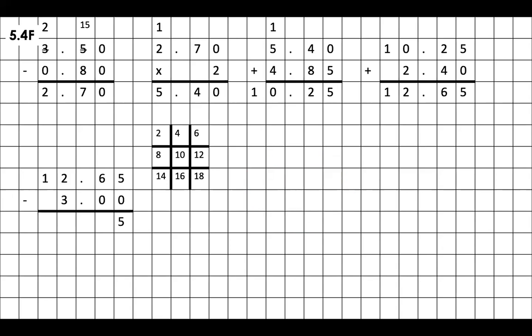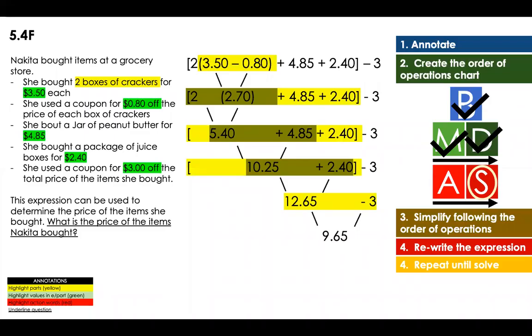Five minus zero, five. Six minus zero, six. You have to put the decimal point. And then two minus three, you cannot. You have to borrow from the tens. If you take 10 from 10, that means 10 becomes a zero. Twelve minus three is equal to nine. Your answer for this one is 9.65, $9.65. That was the price of the items that Nakita bought.